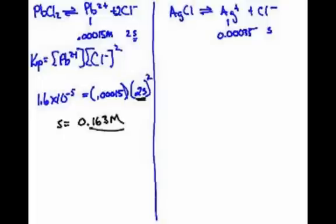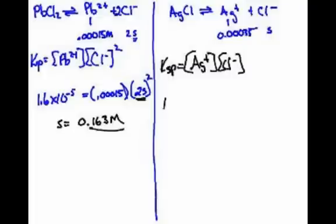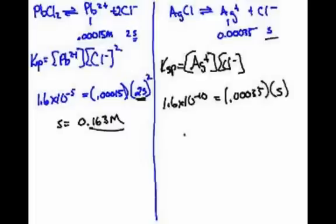Let's get the two numbers, and then we'll talk about what they mean. For this one, of course, we'll say that the KSP is equal to the Ag+ times the Cl-. So the KSP of silver chloride is 1.6 times 10 to the negative 10. That's a much smaller number, but we have a different sort of factor. We don't have to square anything. Right. So 0.00035 times s. I think we're going to get a small number on this one. We are. This one is 4.57 times 10 to the negative 7.